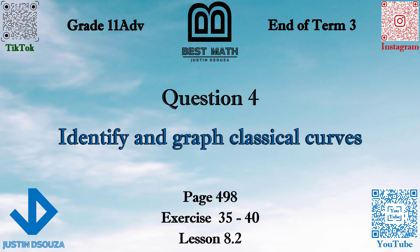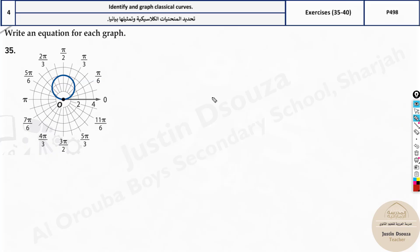The fourth question is about identifying classical curves. Here we have a polar graph. Now if you know the basics of polar graphs, you might tell the answer is related with sine theta, and since the radius is 3, the answer is 3 sine theta. That's the final answer.